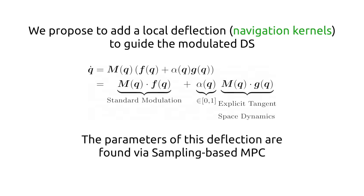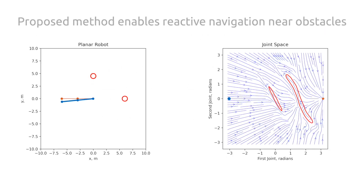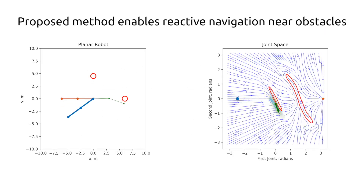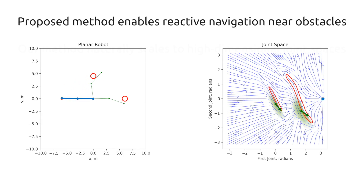To construct such deflection we propose to use sampling-based model predictive control. Navigation kernels introduced in our method improve the performance of the modulated dynamical system, allowing it to overcome both convex and concave obstacles and reach the stable attractor of the nominal dynamical system.